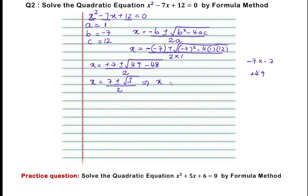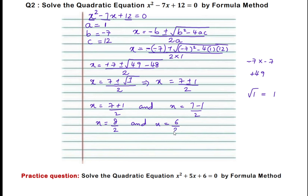Now we get x equals 7 plus or minus the square root of 1, which is 1, whole divided by 2. Taking the plus value: x equals 7 plus 1 is 8, divided by 2, giving x equals 4. Taking the minus value: x equals 7 minus 1 is 6, divided by 2, giving x equals 3. Therefore the roots of the quadratic equation are 4 and 3.